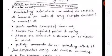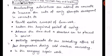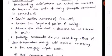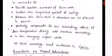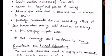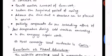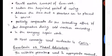Accelerators: accelerating admixtures are added to concrete to increase the rate of early strength development, to permit earlier removal of formwork, to reduce the required period of curing, to advance the time a structure can be placed in service, and to partially compensate for the retarding effect of low temperature during cold weather concreting, as well as in emergency repair work. The most commonly used accelerator is CaCl2.